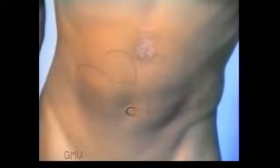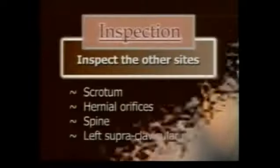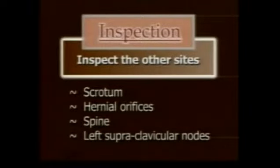This completes the inspection. Remember to inspect the four extra sides of the abdomen: scrotum, hernial orifices, spine, and the left supraclavicular lymph nodes.